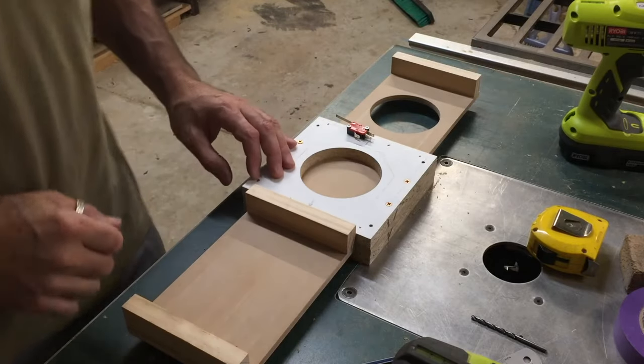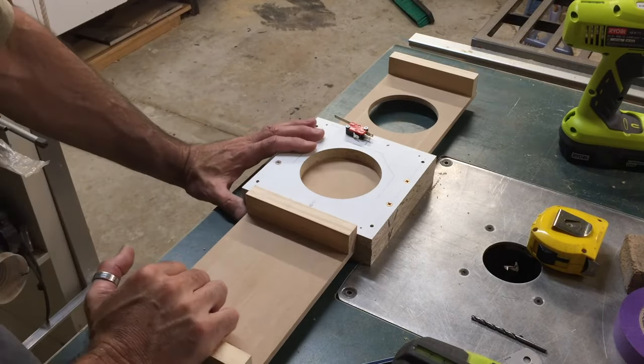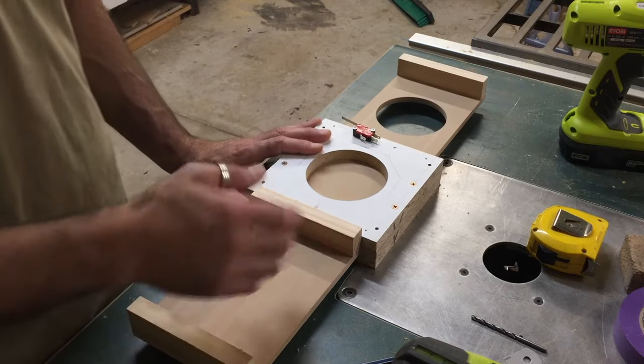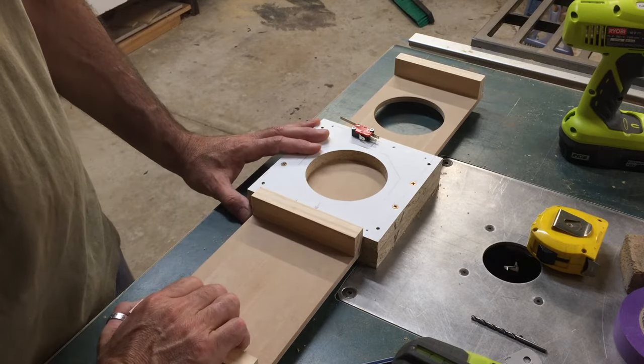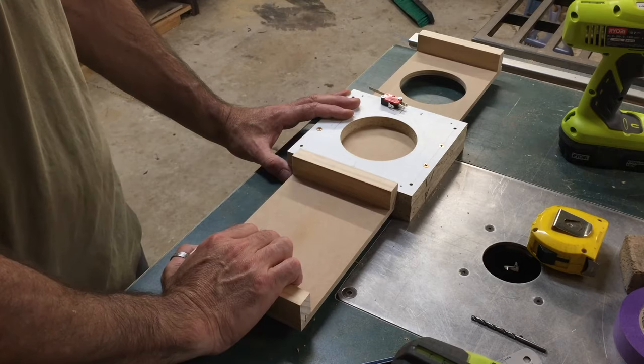Alright, so the sliding mechanism is basically finished now, and it's working really well. So that's in the closed position obviously, and I'll be able to grab that from the front of the table saw.